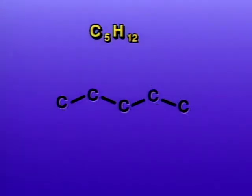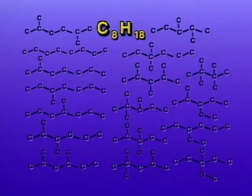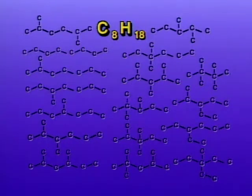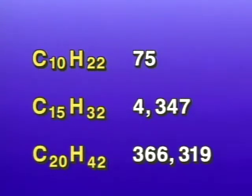We'll take away the hydrogen atoms so we can concentrate on the carbon skeleton. The five carbon atoms can be arranged in three different ways: as a single chain, or a chain with one or two branches. Each of the three compounds is different, with its own physical and chemical properties, but they have the same molecular formula, C5H12. Compounds that have the same formulas but different structures are called structural isomers. The more carbon atoms in the molecule, the higher the number of possible isomers. The hydrocarbon with eight carbons, octane — a major component of gasoline — has 18 possible isomers. A molecule with 20 carbons has over one-third of a million potential isomers.